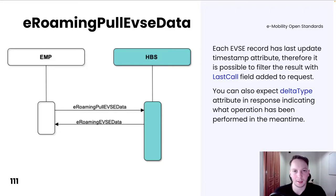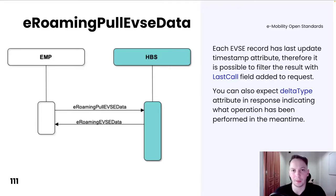Besides lastCall, Hubject includes a deltaType attribute in the response which can tell what kind of operation was performed. Unfortunately, lastCall filtering cannot be combined with other types of filtering like search center, country codes, and operator IDs.